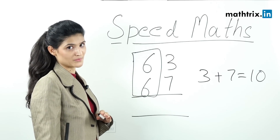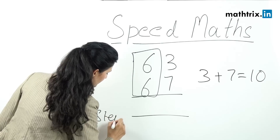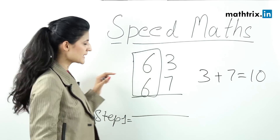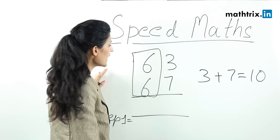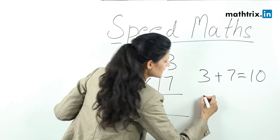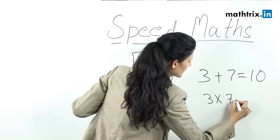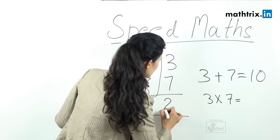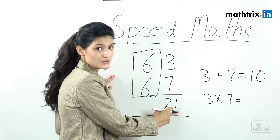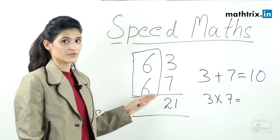Now let's look at how to multiply these partially complementary numbers. Step number one: multiply the unit digits. So here we multiply 3 and 7, which gives us 21. These become the last two digits of your answer.